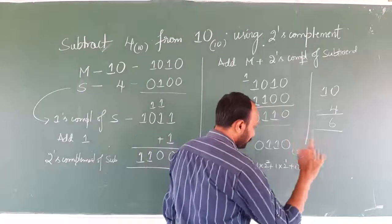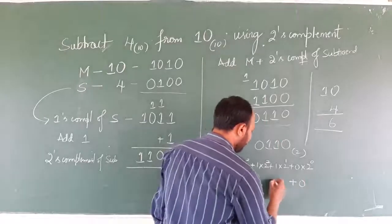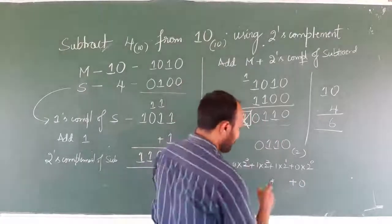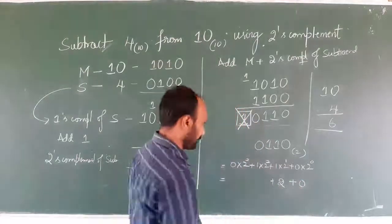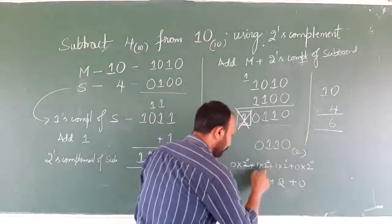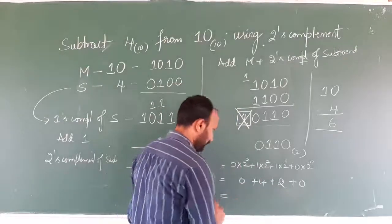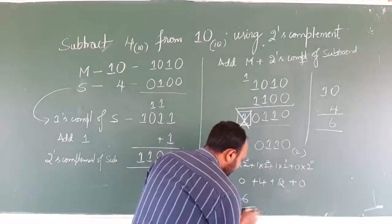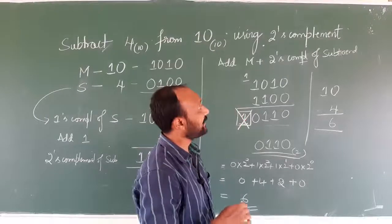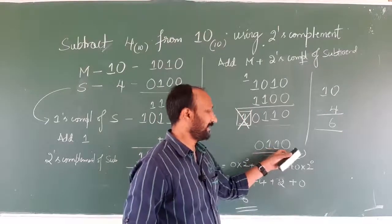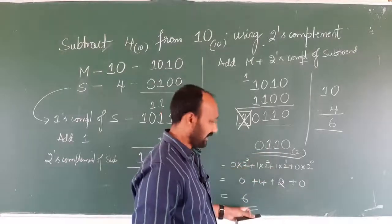Anything to the power 0 is 1, so 1 × 0 is 0. 2 to the power 1 is 2; 2 × 1 is 2. 2 to the power 2 is 4; 4 × 1 is 4. 2 to the power 3 is 8; 8 × 0 is 0. So 4 plus 2 is 6. The binary value 0110 obtained by applying two's complement subtraction is correct. We converted this binary to decimal equivalent and got the answer 6. If you subtract 4 from 10, we get 6 — our answer is correct.